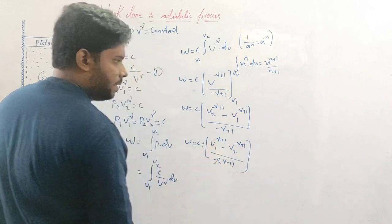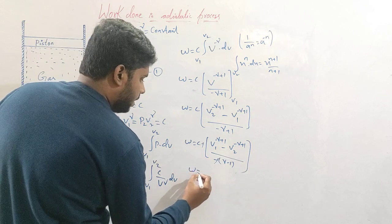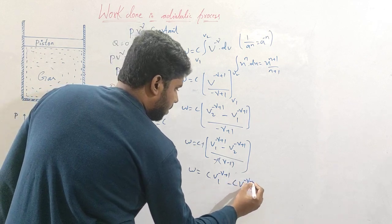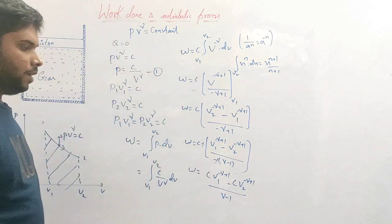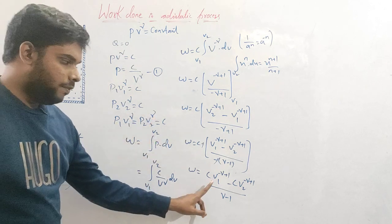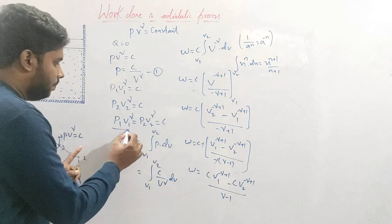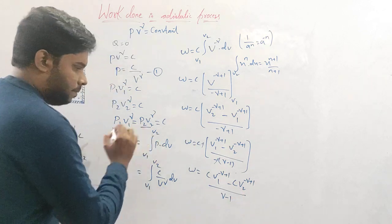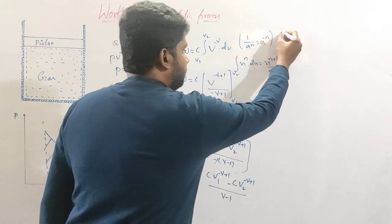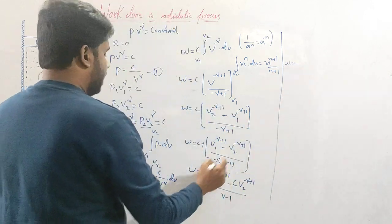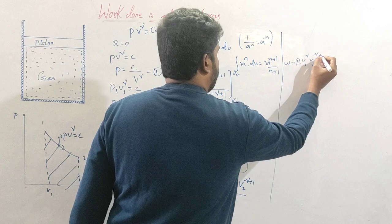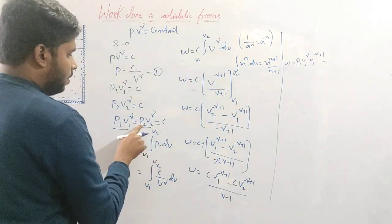After the minus terms cancel, multiplying C inside the bracket gives: C·V1^(−γ+1) − C·V2^(−γ+1), all divided by (γ−1). We know C = p1 V1^γ = p2 V2^γ. So substituting: in place of C·V1^(−γ+1), we write p1 V1^γ · V1^(−γ+1); and in place of C·V2^(−γ+1), we write p2 V2^γ · V2^(−γ+1).